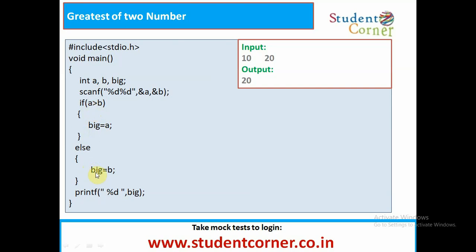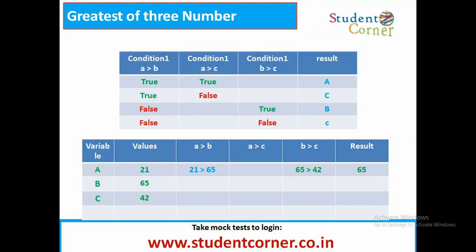Greatest of three numbers is the most important part. For two numbers we need to check only one greater-than relation, but for three numbers it is difficult to judge which is greatest. We need to follow a table and check a minimum of two conditions. We get three conditions: A greater than B, A greater than C, and B greater than C. If A greater than B is true and A greater than C is true, then A is the greatest.